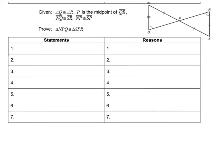For my next proof, it looks a little different. What I'm given is a couple angles that are congruent — Q is congruent to R, already marked in my picture. P is the midpoint on segment QR. And then I have a couple sides that are congruent: NQ congruent to SR with two ticks, and NP congruent to SP. My goal is to prove the two triangles are congruent. To do that, I'm going to need two more angles and one more side shown congruent.